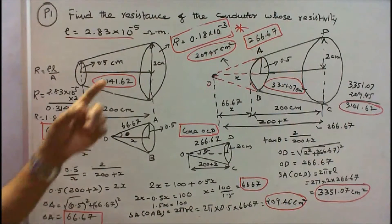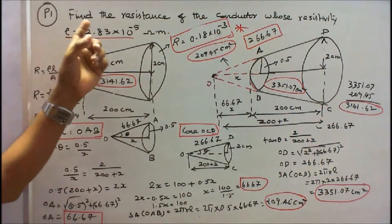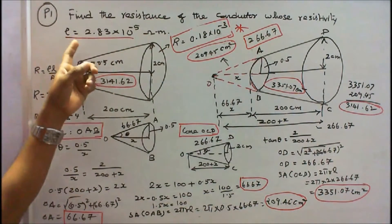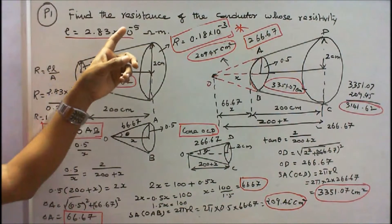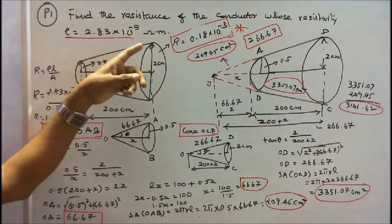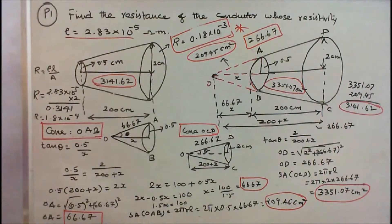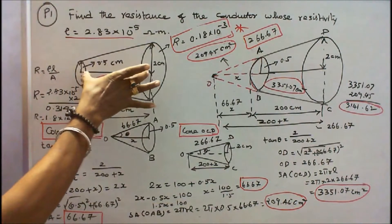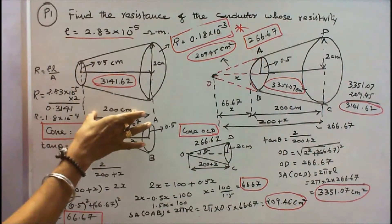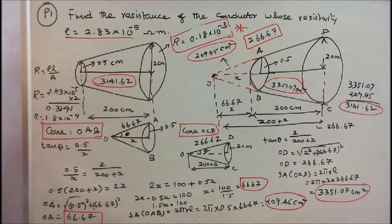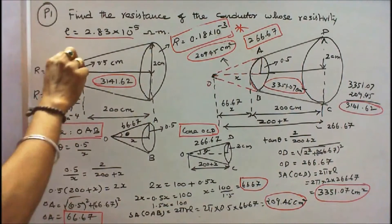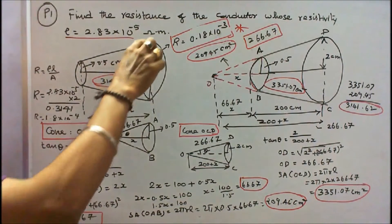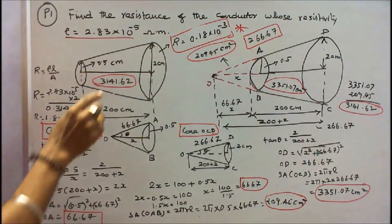Problem number one: find the resistance of a conductor whose resistivity rho is equal to 2.83 × 10⁻⁵ ohm-meter. From the given figure, the length is 200 centimeters or 2 meters, the smaller radius is 0.5 centimeters, and the larger radius is 2 centimeters. It is a frustum shape.